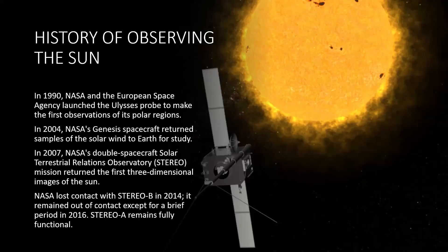In 1990, NASA and the European Space Agency launched the Ulysses probe to make the first observation of its polar regions. So, up to that time, we could only make an observation around the equator of the sun. We didn't know what the polar regions, either north or south pole, looked like and what they did. In 2004, NASA's Genesis spacecraft returned samples of the solar wind to Earth for study. Now we actually were able to pick up bits of matter from the sun and bring it back to Earth.